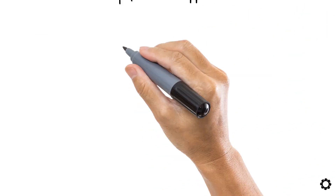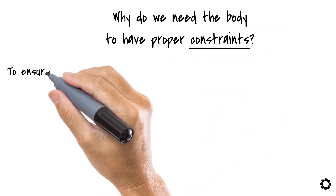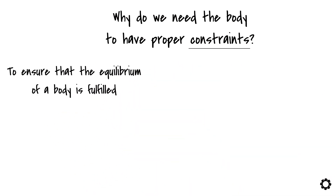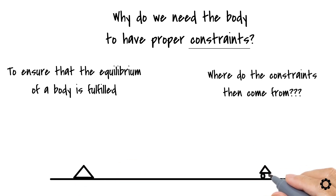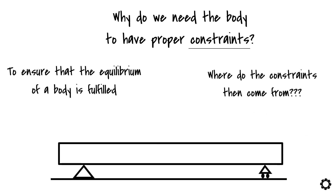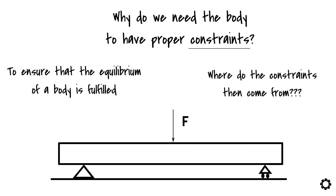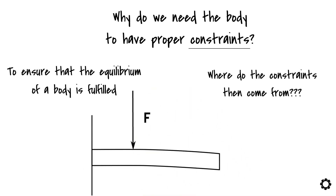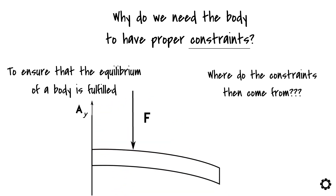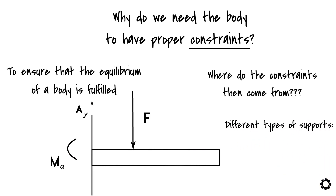First things first, why do we need the body to have proper constraints? The purpose of constraints in the body is to ensure that the equilibrium of the body is fulfilled. The constraints are formed by the supports which support the body. If a support prevents translational displacement caused by an external force in a specific direction, it creates a counterforce in the body. Depending on the type of support, it can also prevent rotational displacement, developing a counter-moment in the body. There are different types of supports, each creating corresponding constraints.